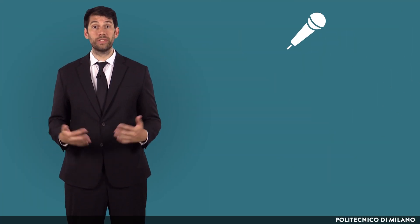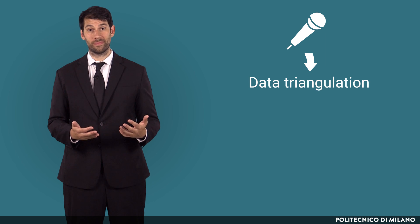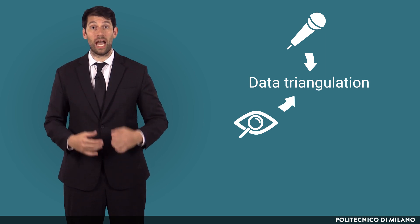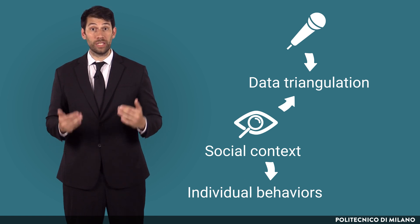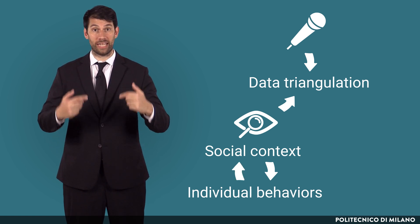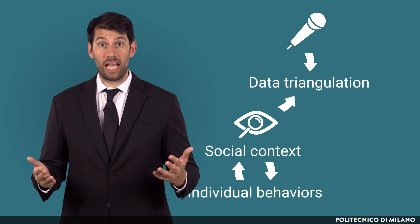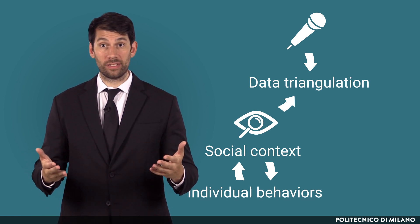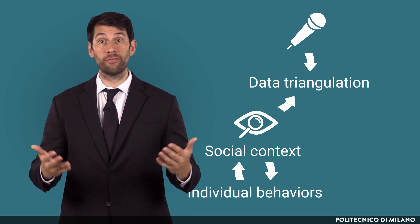In interviews, there are two other data collection methods to be used in a case study that allow data triangulation. The first is researcher observation. It consists in understanding the social context, how it influences individual behaviors, and how in turn individual behavior influences the context. Observation is carried out through site visits as an outside observer, or through participant observation of given events inside the unit of analysis, like a strategic meeting involving managers as informants.